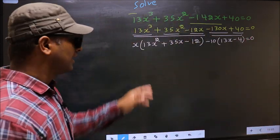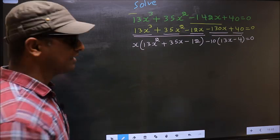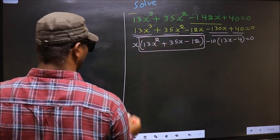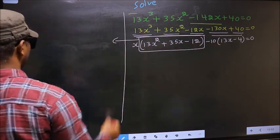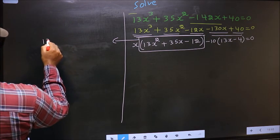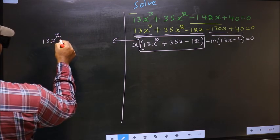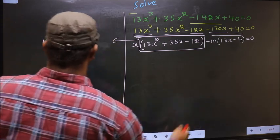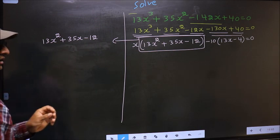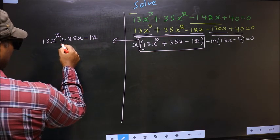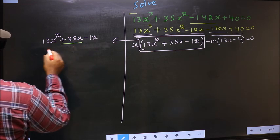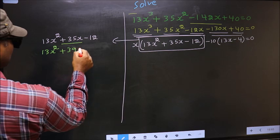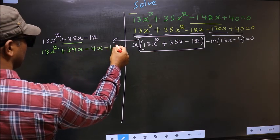Now in this equation we have come across a quadratic. So I will factorize the quadratic: 13x² + 35x - 12. To factorize this, we should split the middle term +35x. In place of +35x, I write +39x - 4x - 12.